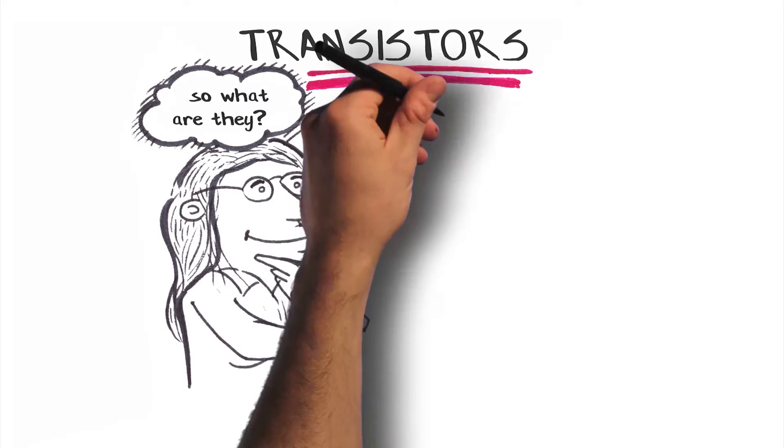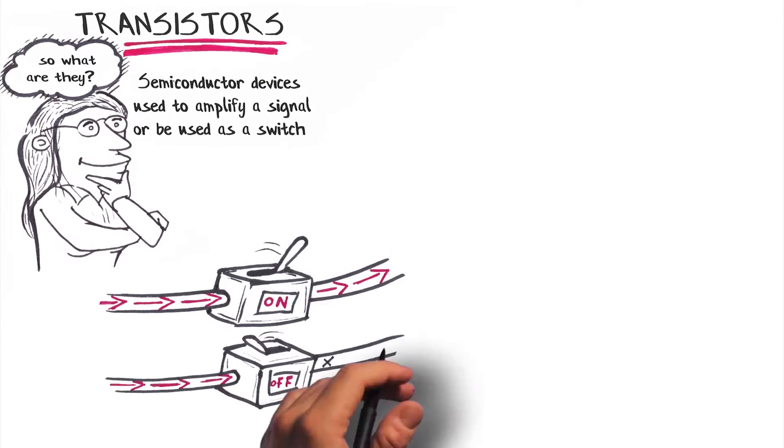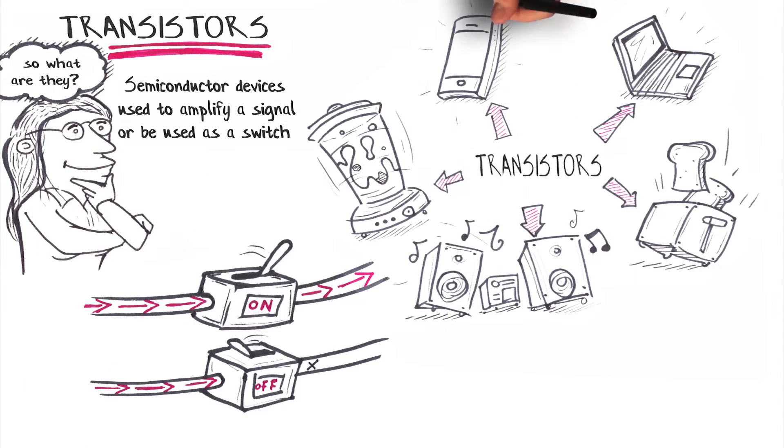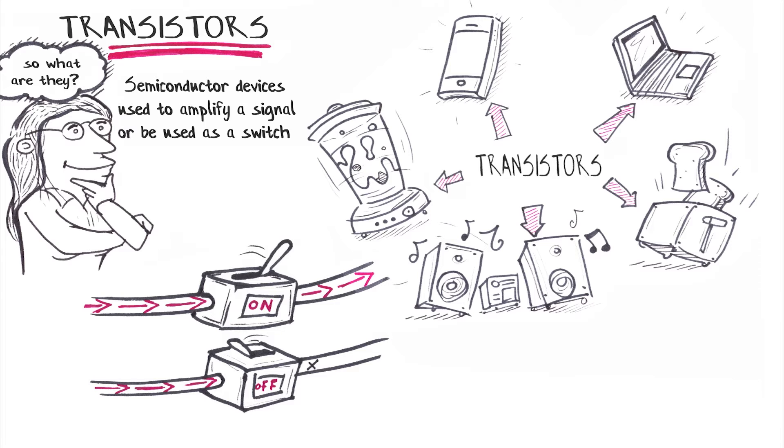Transistors are semiconductor devices that can be used to amplify a signal or as a switch. You find them in almost all present-day appliances like phones and laptops. These devices are very important and they form the heart of modern-day electronics.